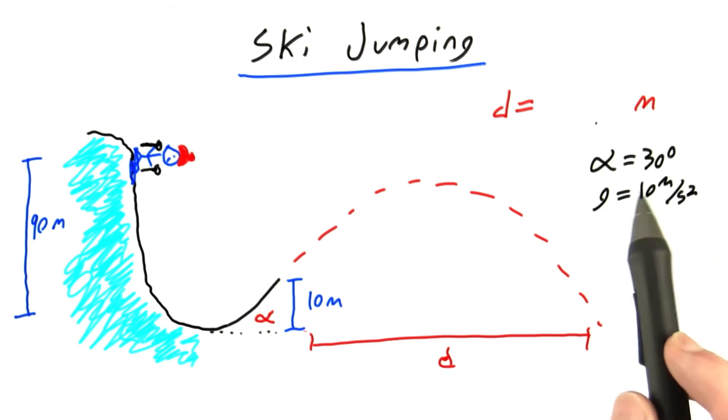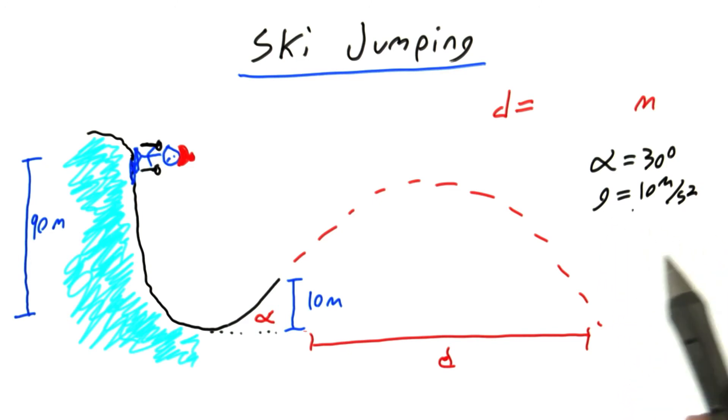So, put your answer here and use 30 degrees for alpha and use 10 meters per second squared for g rather than 9.8, just so we're all on the same page.